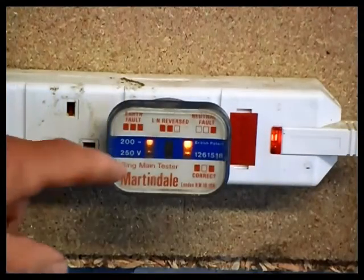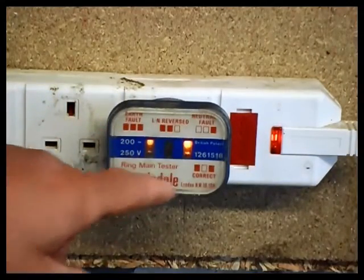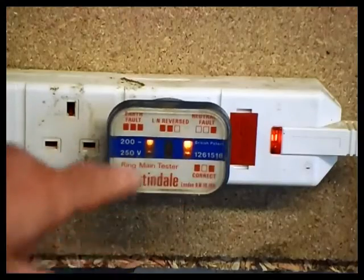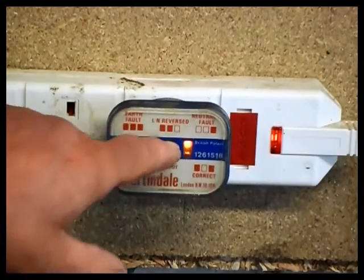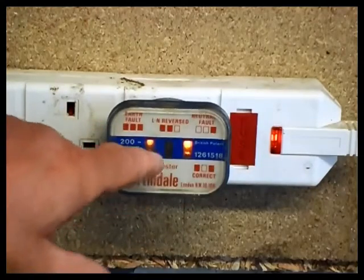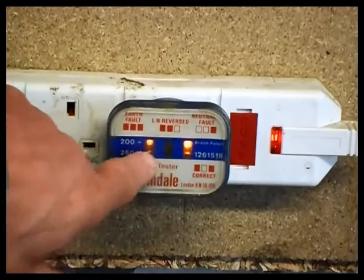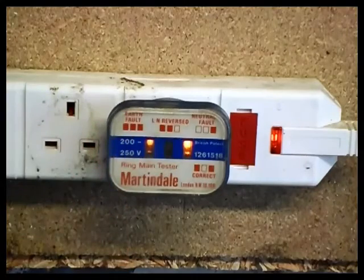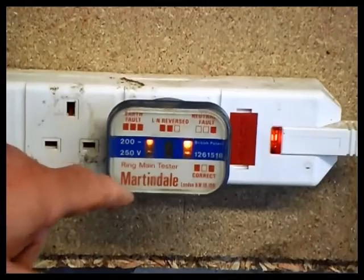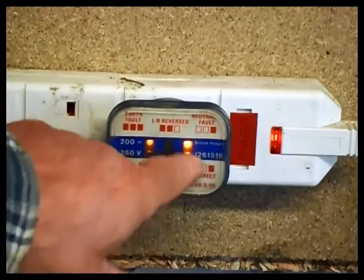As you can see there, the two outside lights have lit up, so that says it's correct. If all three light up it means you've got a bad earth. If these two light up it means your live and your neutral are reversed.